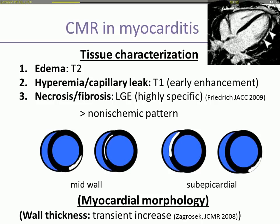Tissue characterization is based on three techniques. T2-weighted imaging sensitively detects edema. T1-weighted imaging, following the first minutes after gadolinium injection, shows hyperemia and capillary leak due to regional vasodilatation. This technique is called early enhancement. Late gadolinium enhancement is a highly specific and robust technique to image in vivo necrotic scar and fibrosis.